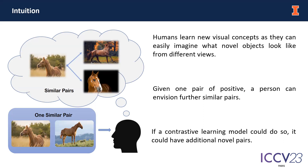Our inspirations come from the learning process of humans. Given one pair of positive images, let's say a pair of horses, a person can envision further similar pairs by imagining one of the horses in different poses and surroundings. Therefore, if a contrastive learning framework could do such a hallucination process or envision process, it could additionally provide a number of pairs for contrast.